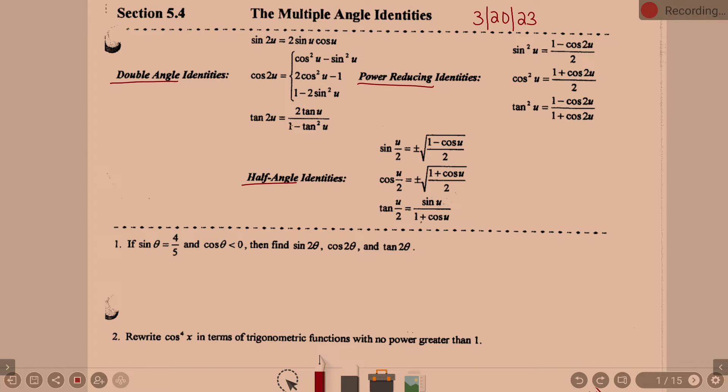Power reducing, sine squared, cosine squared, tangent squared. Power reducing means, how can I rewrite this without the squared? And you'll notice what they're equal to, they have the double angles back, but the powers are gone.